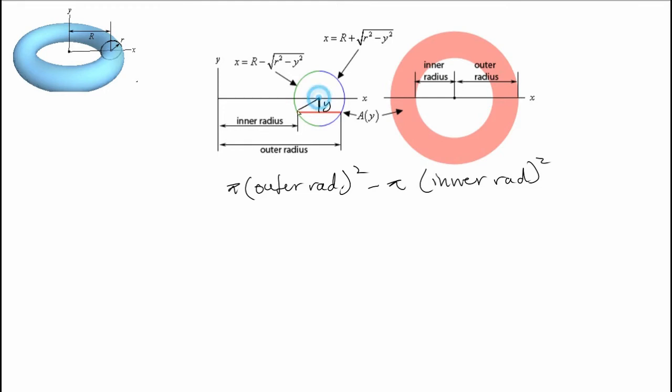Well we know that the radius of this little circle is lowercase r. So we can figure out this small length right here, which is going to be square root of r squared minus y squared. And we know based on this diagram that this is going to be capital R. So the inner radius is capital R minus square root of r squared minus y squared. And the outer radius is capital R plus square root of r squared minus y squared.